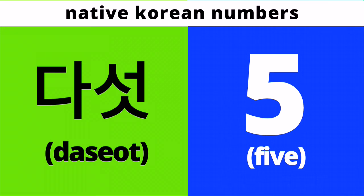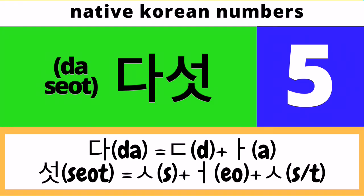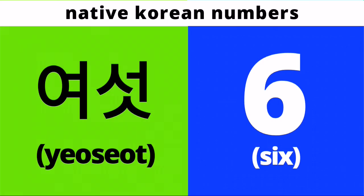Next, the native Korean version of number five is Da sot. Pronounce it with me: Da sot. This is composed of two syllables — the first syllable is Da, the second syllable is Sot. To spell Da sot in Hangul, for the first syllable Da we need to draw a Digeut character followed by an A character. For the second syllable Sot, we need to draw a Siot character followed by an O character followed by another Siot character.